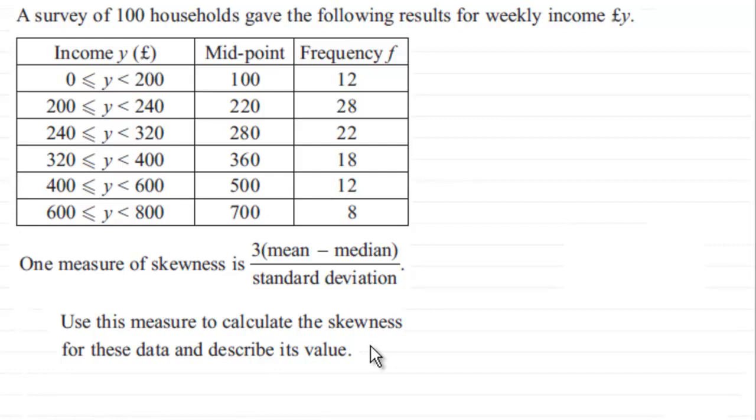Okay, so let's see how you got on. First of all, we need to remind ourselves from the previous parts what the mean, median, and standard deviation were. We've got these values here: the median was 276.3636 and so on, the mean was 316, and the standard deviation was 157.073 and so on.